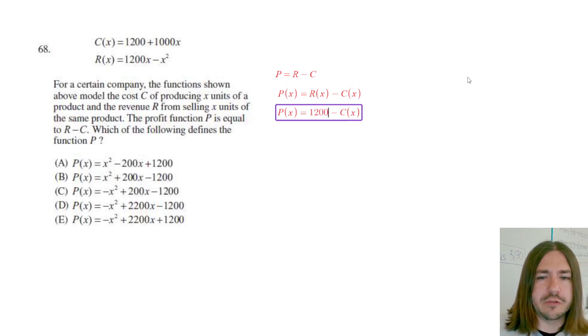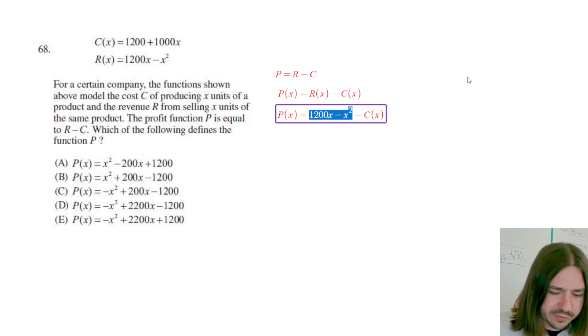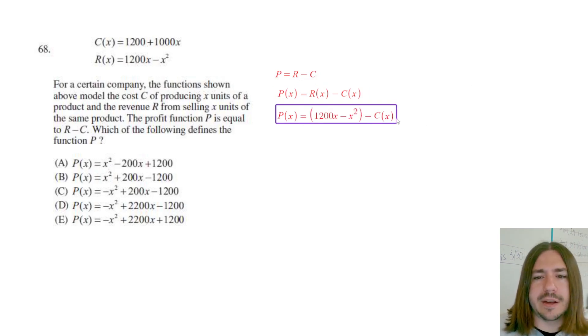So R of X here is going to be 1200X minus X squared. I'll just put parentheses here temporarily. Minus C of X, so C of X here is 1200 plus 1000X.